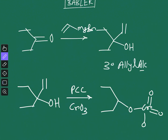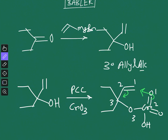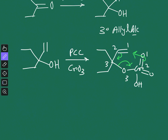Once the chromate ester is formed, if you look carefully, you have a 1-2-3 arrangement here and a 1-2-3 arrangement there, giving a 3,3-arrangement. This creates the possibility of a [3,3]-sigmatropic rearrangement, which then takes place.